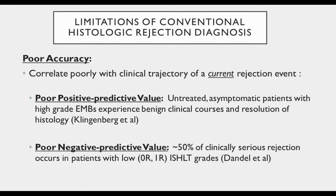When it comes to accuracy, the grading criteria fare little better. If we define accuracy as the ability of a test to identify the entity of actual clinical interest, conventional grading is quite lacking. ISHLT grades correlate poorly with the actual clinical severity of an ongoing rejection event. Poor positive predictive value is highlighted by case-series data showing that many asymptomatic patients with high-grade histology can experience benign clinical courses and resolution of that histology even without rejection treatment. Poor negative predictive value is highlighted by evidence showing that up to half of people with serious allograft injury and heart failure symptoms have low-grade histology.